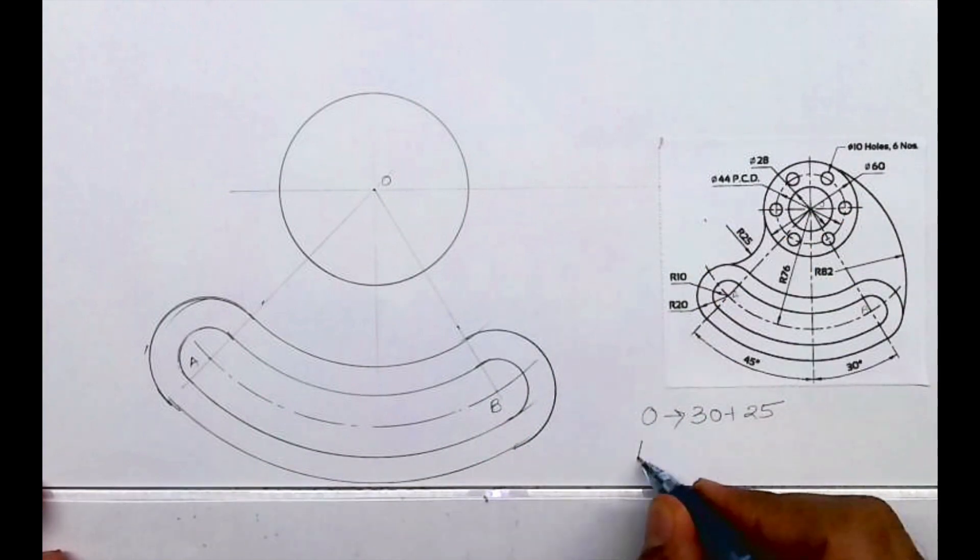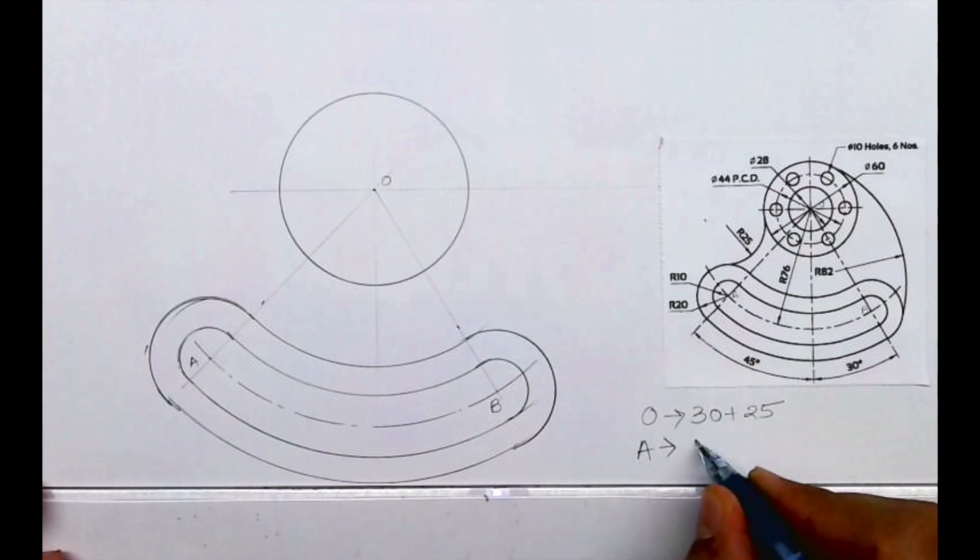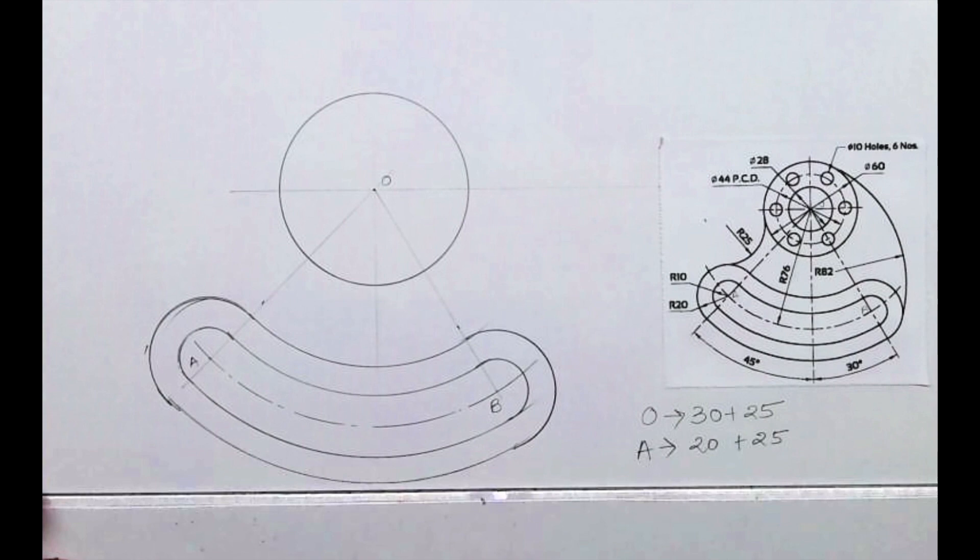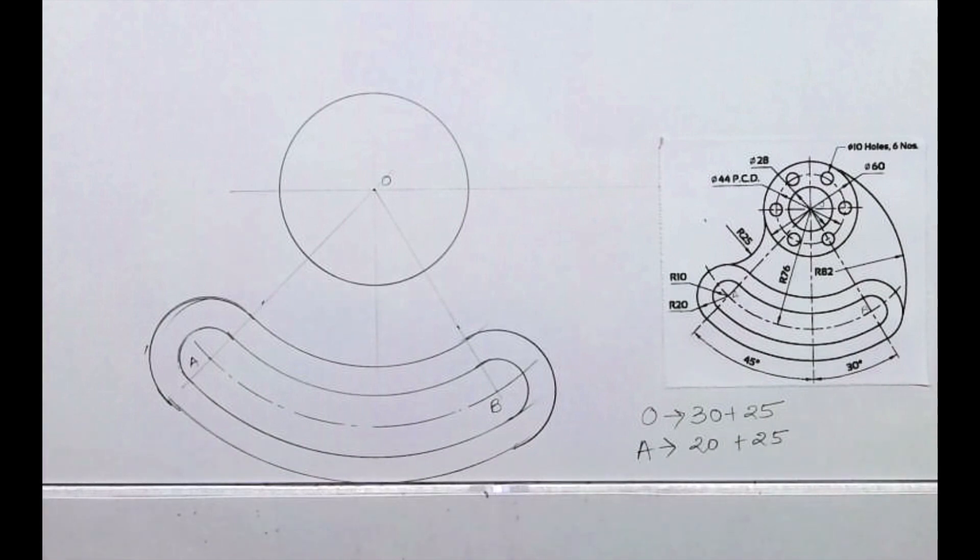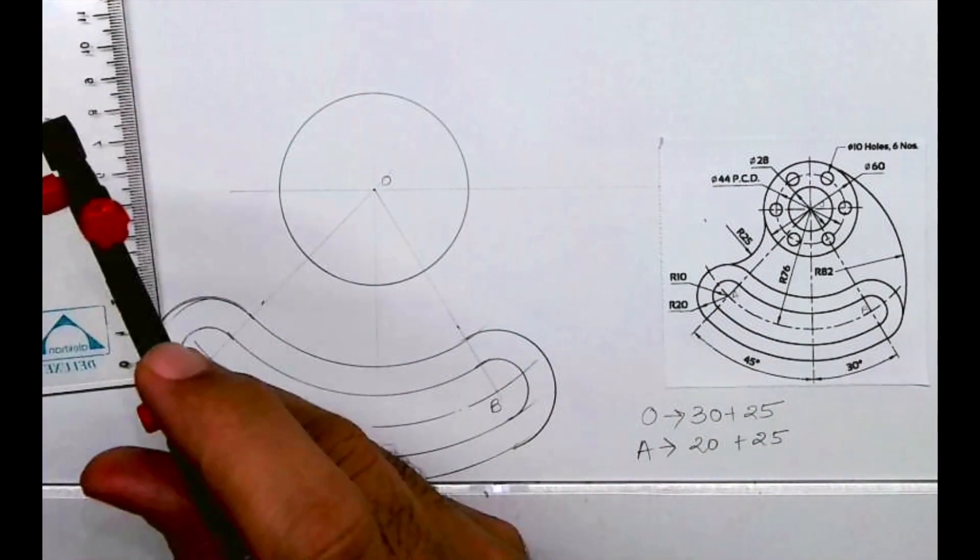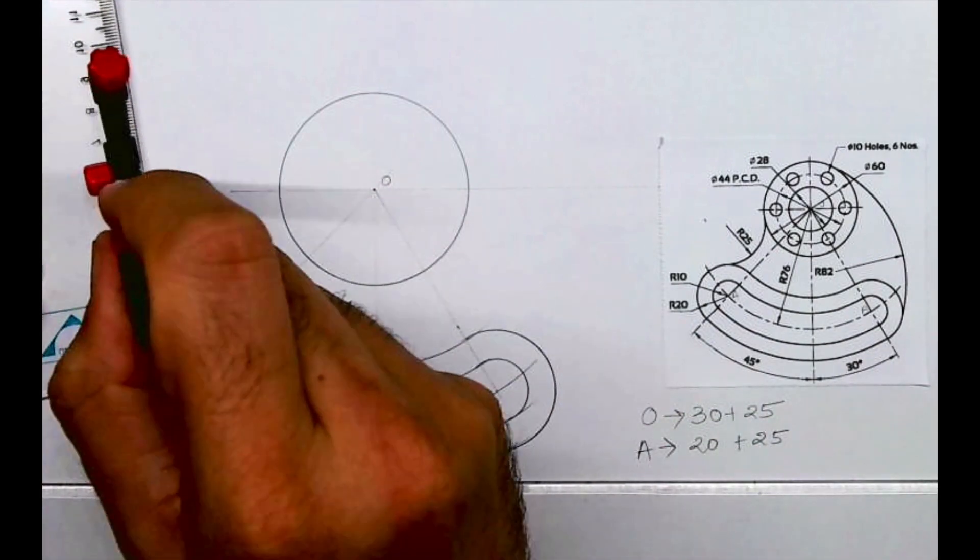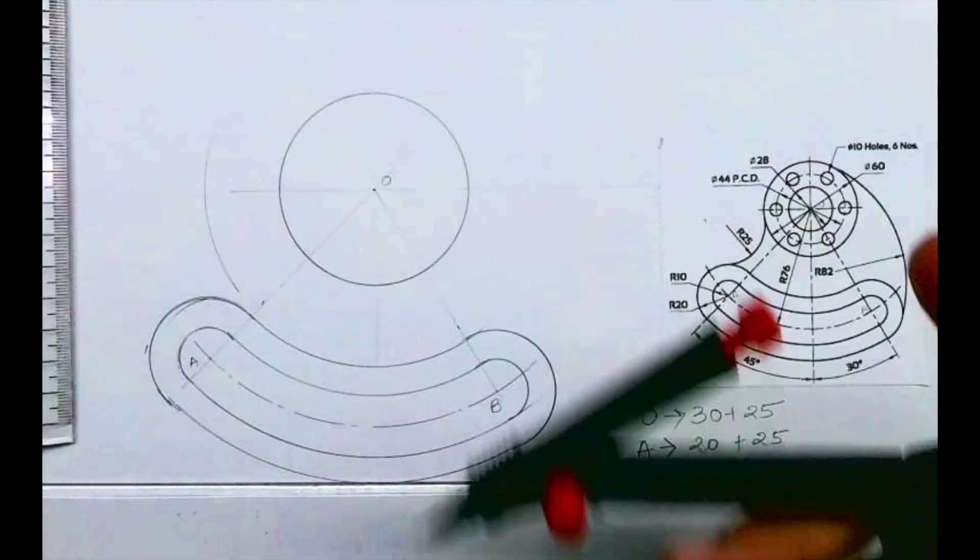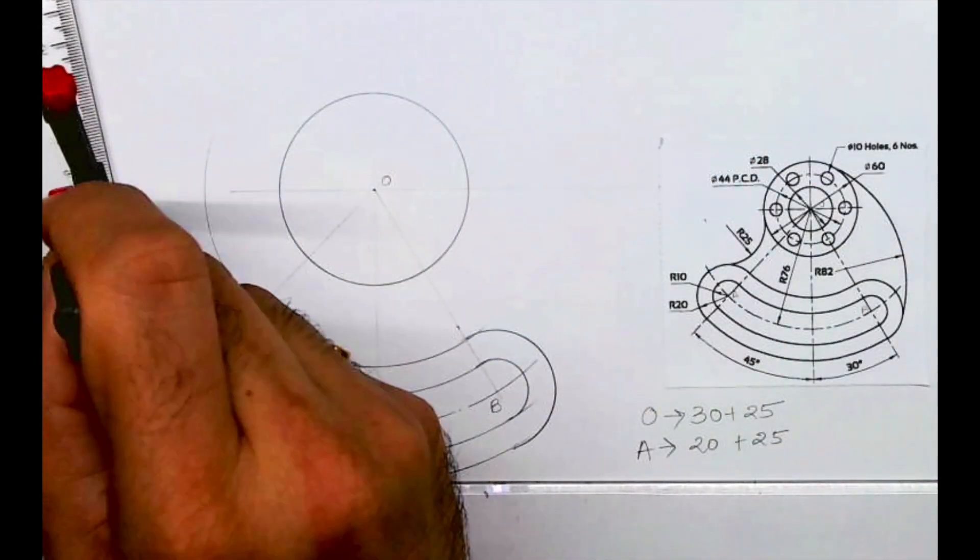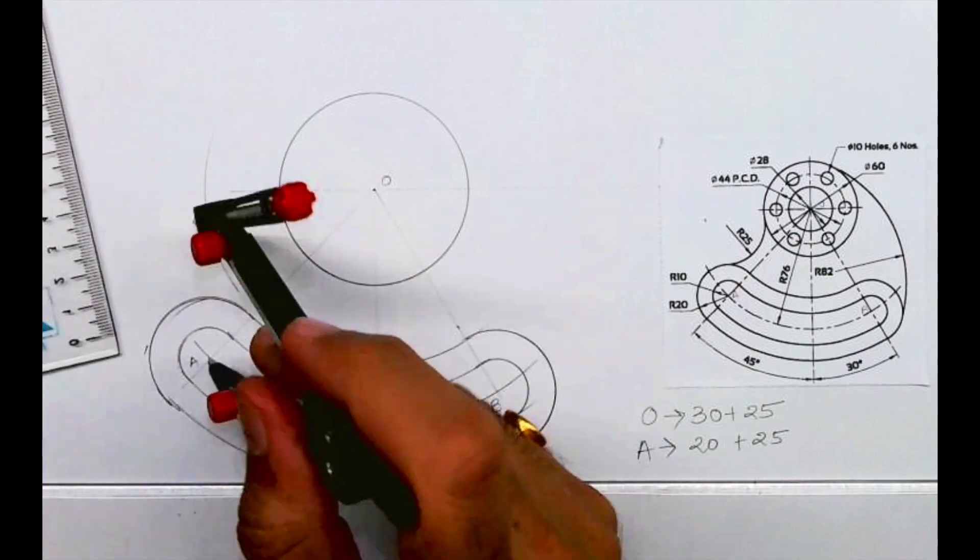And from A we'll cut 20 plus 25. So that is 55 and 45. So from O we will cut 55 and from A we will cut 45. And wherever they intersect, from that point we can draw radius 25.